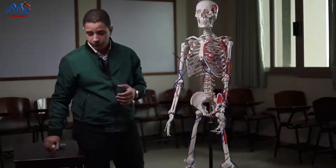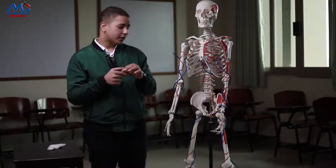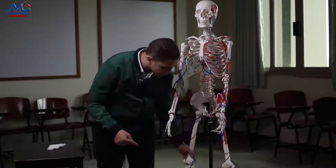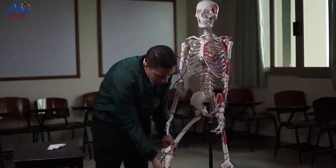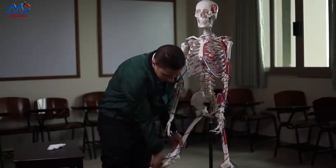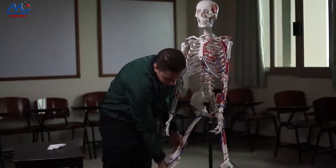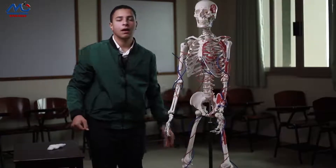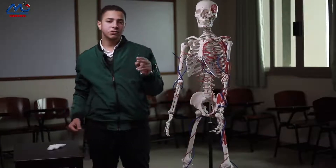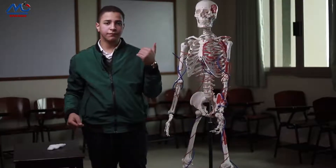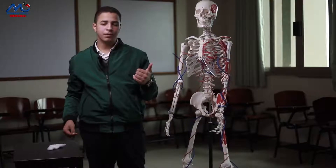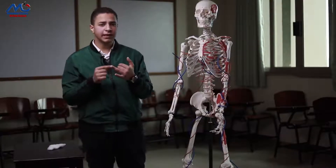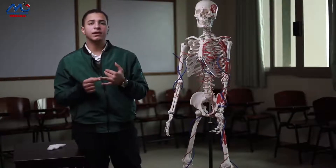The ligament. Ligaments are mainly damaged from moving your joint in a wrong direction that it doesn't support, like in this way. And this damage could be classified in two stages: the first stage, when there is a partial ligament tear, or the second stage, a complete ligament tear.